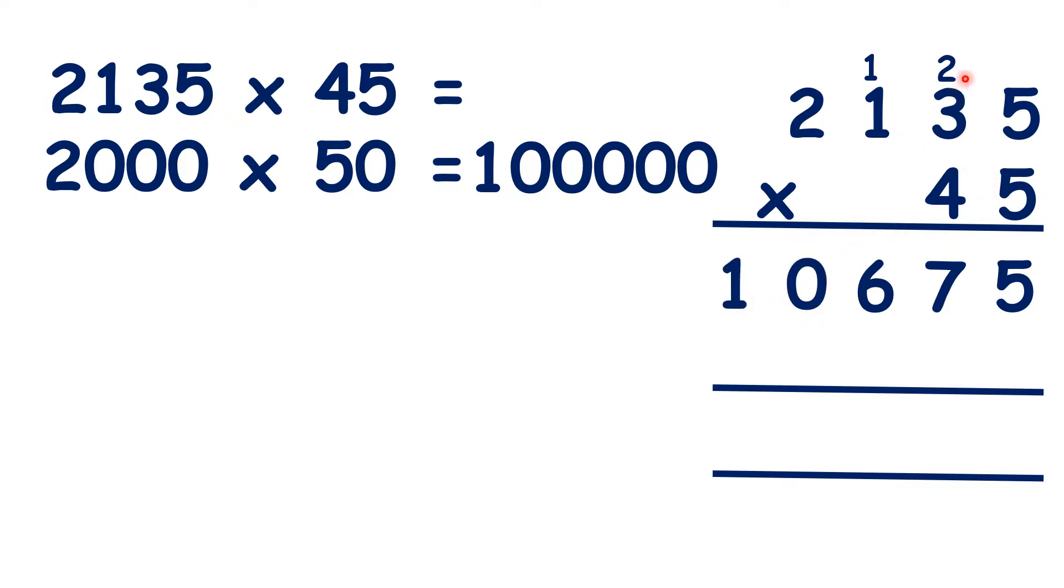Now, we can cross out our working, write a 0 in the units column of our second answer line, and now, 5 times 4 is 20, 3 times 4 is 12, plus 2 is 14, 1 times 4 is 4, plus 1 is 5, and 2 times 4 is 8.